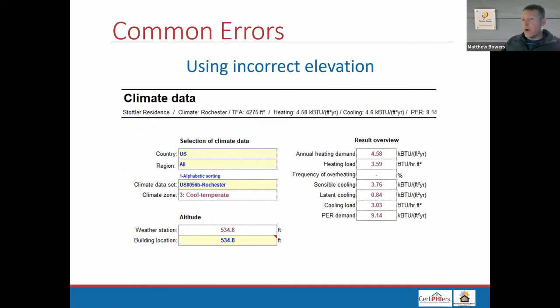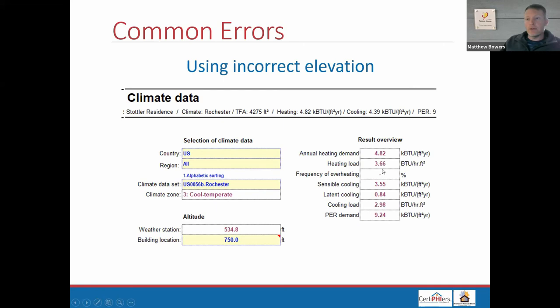A really common error, especially when the designer is working on a project in a different location, is using the incorrect elevation in the climate tab. For example, in Rochester: if we use the weather station elevation as the building elevation and meet the criteria comfortably at under 4.6 kBtu/ft²·yr against a limit of 4.75 — then realize we forgot to update the building elevation to the actual 750 feet — we're now over the limit. It's super important to change the building elevation to the actual build site elevation. This has doomed a few projects.